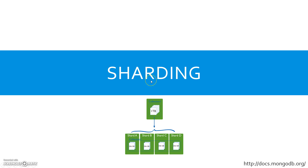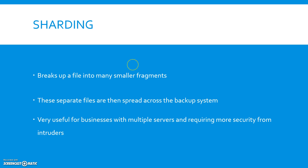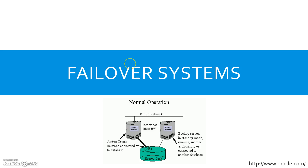The third method is called sharding. This is used to prevent hacking — it breaks up a file into many smaller fragments, and these separate files are then spread across the backup system. It is very useful for businesses with multiple servers that require more security from intruders.